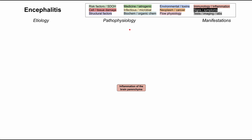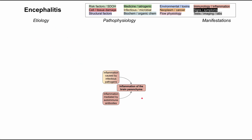The central pathophysiology for encephalitis is inflammation of the brain parenchyma. Working back to the etiologies, two large branch points appear: infectious encephalitis, where the inflammation is caused by an infectious pathogen, and autoimmune encephalitis, where the inflammation is mediated by autoimmune antibodies. We'll talk about infectious encephalitis first.